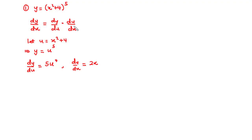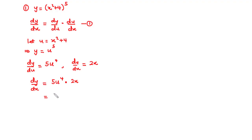From the chain rule, dy/dx = dy/du × du/dx = 5u⁴ × 2x. Since u = x² + 4, we substitute to get 5(x² + 4)⁴ × 2x, which simplifies to 10x(x² + 4)⁴.